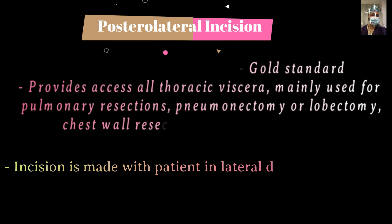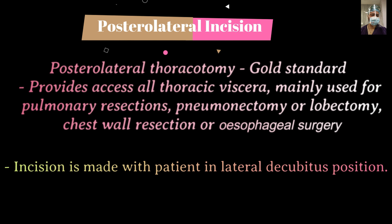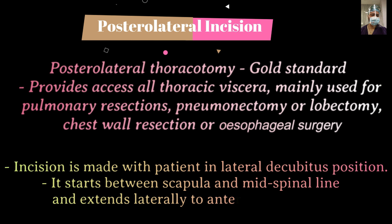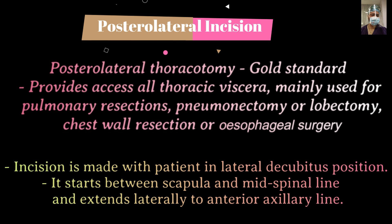There are two types of thoracotomy described in literature: posterolateral and anterolateral. Posterolateral thoracotomy is the gold standard and is what we are demonstrating in this video. It provides access to all thoracic viscera and is mainly used for pulmonary resection, pneumonectomy, lobectomy, chest wall resection, or esophageal surgery.